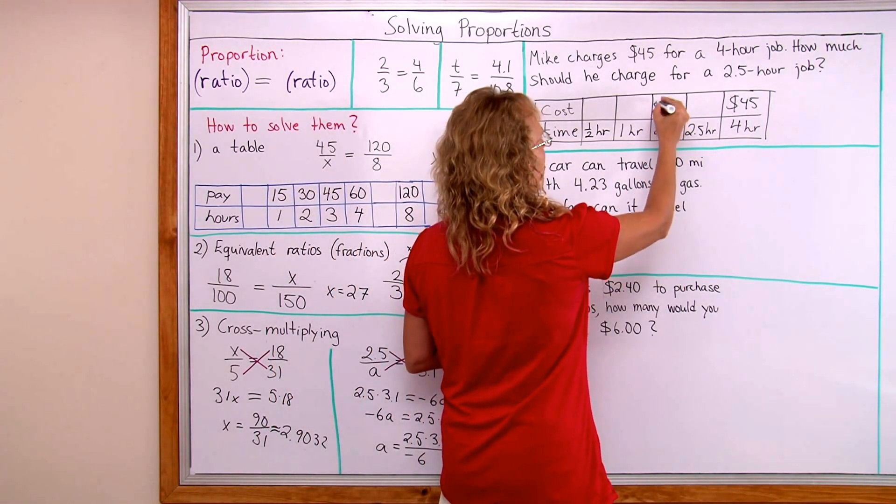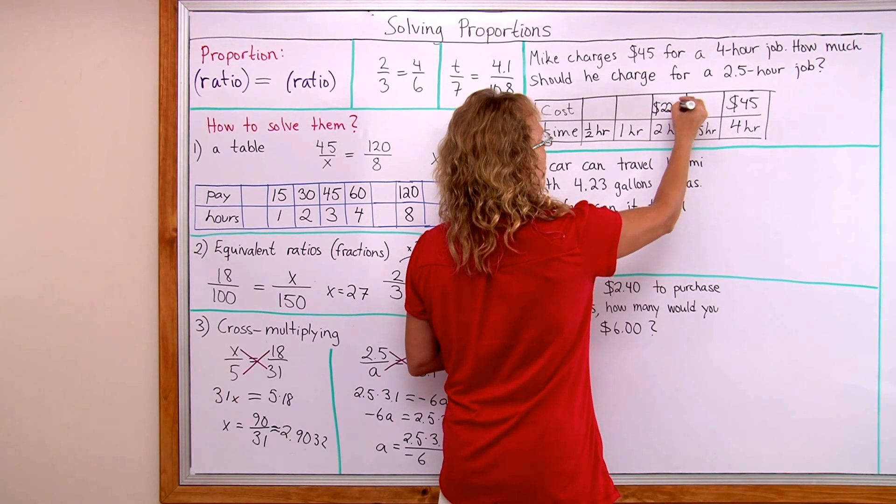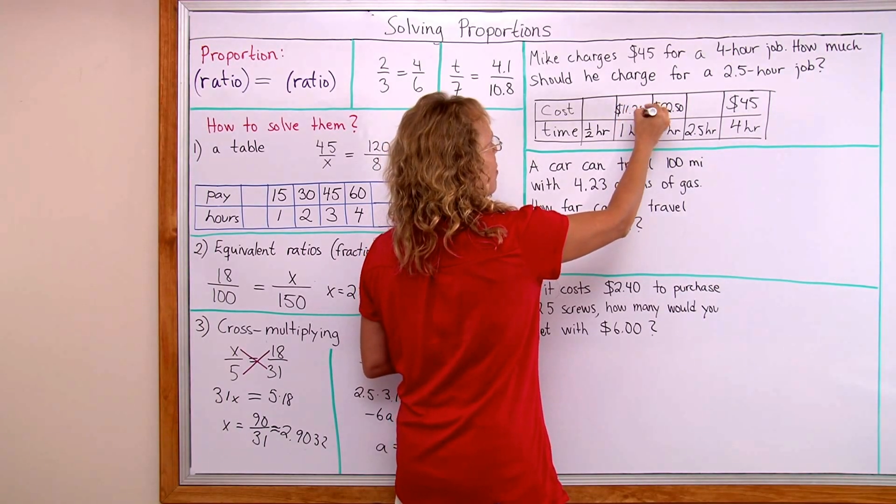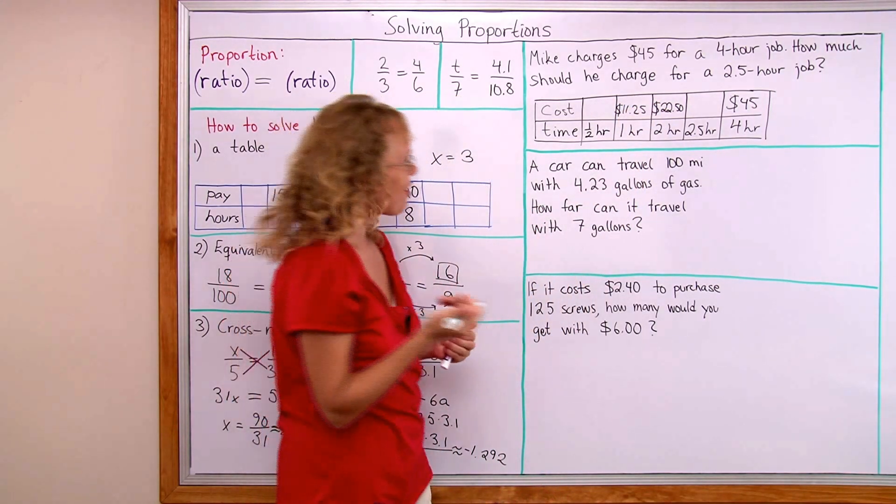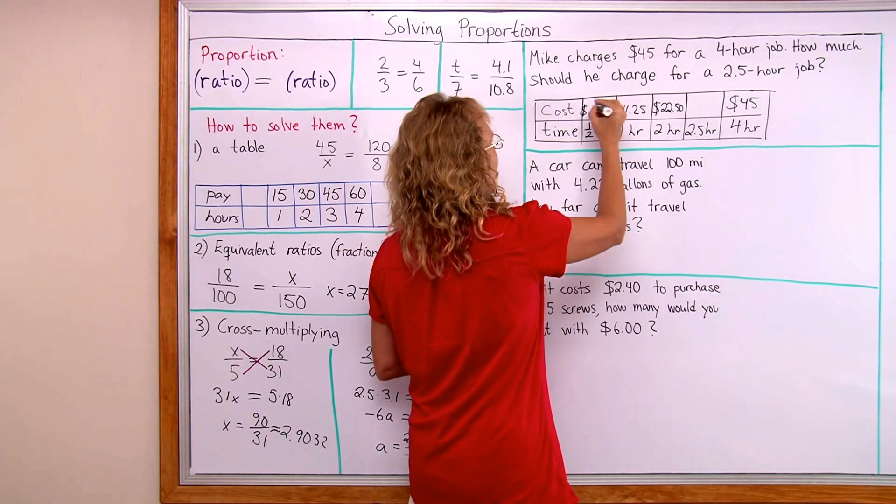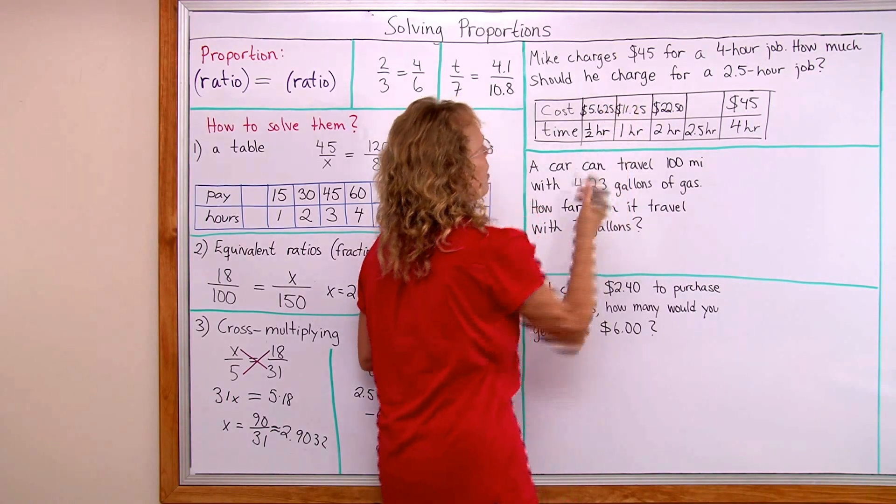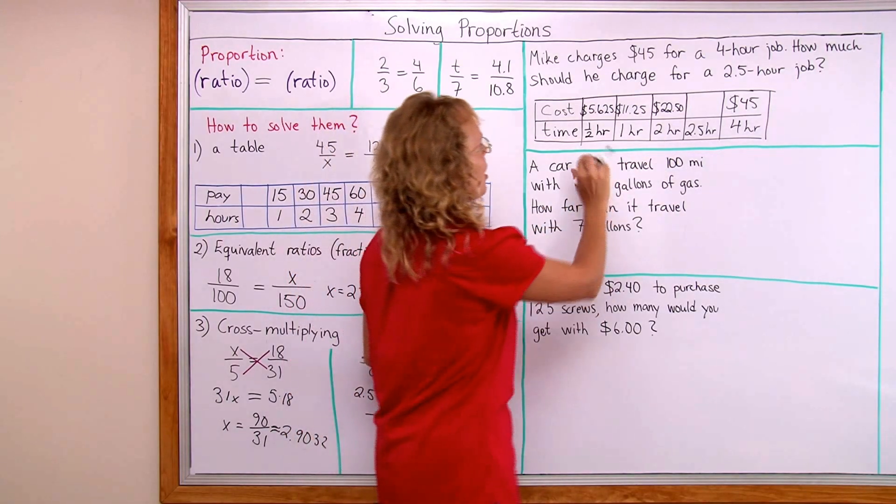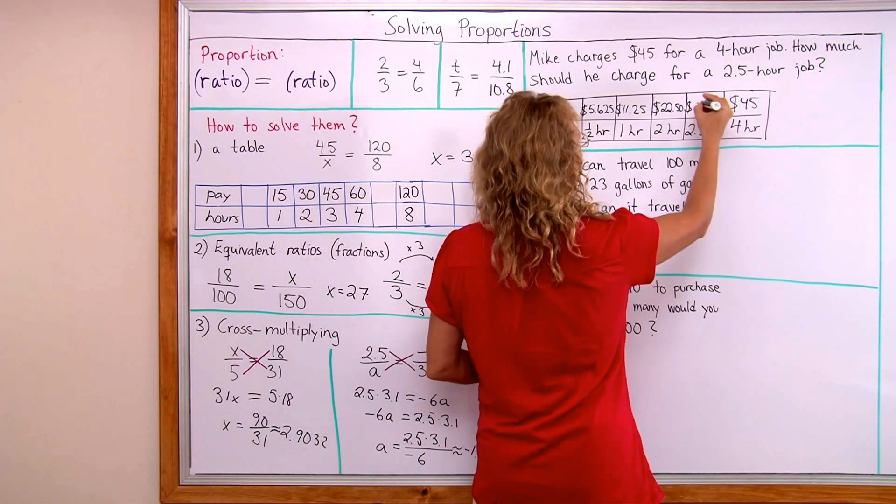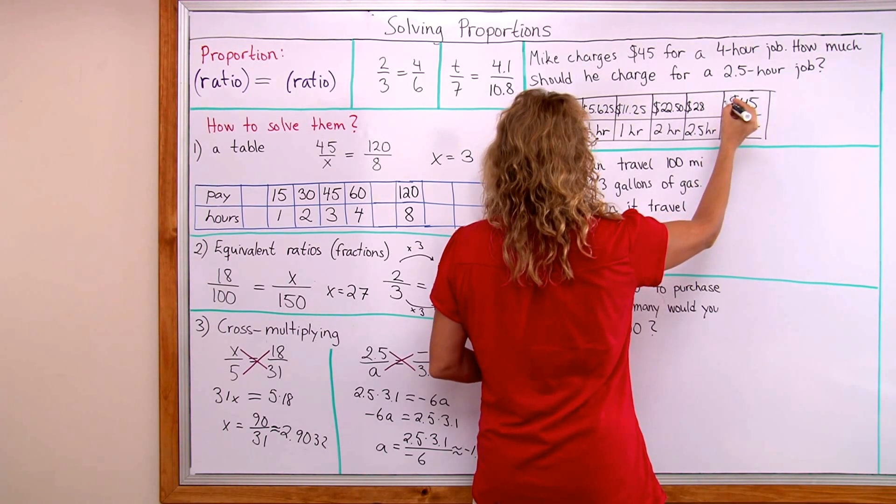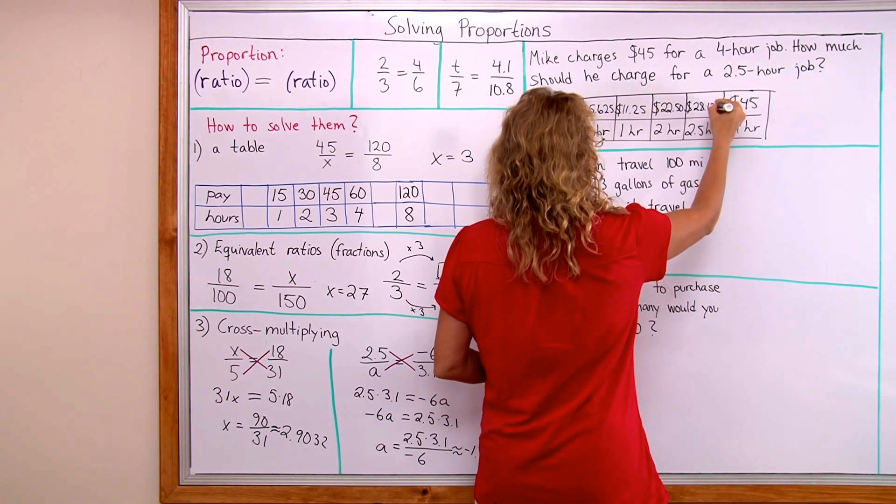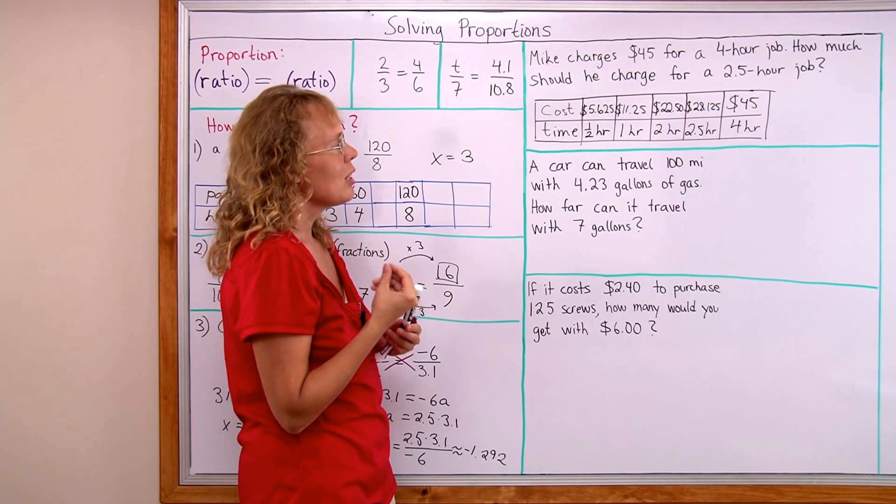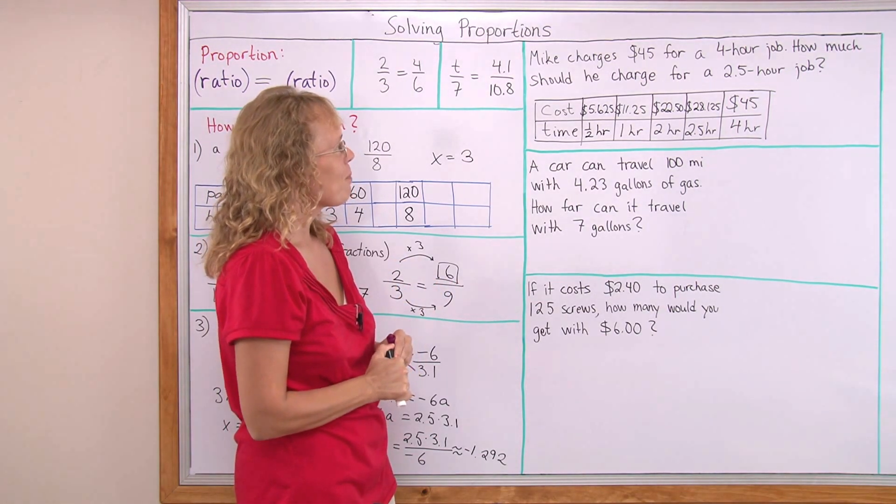So for two hours it would be half of that. It would be 22.50. For one hour would be half of that which is 11.25. And then for half an hour it would be half of that which would be five dollars and sixty-two. Actually five dollars and sixty-two point five. And now if I take the half an hour and two hour amounts I can add those and get the final amount. There's twenty-eight dollars and twenty-eight dollars point one two five. You have to round that to twenty-eight dollars and thirteen cents. Okay so problem solved.